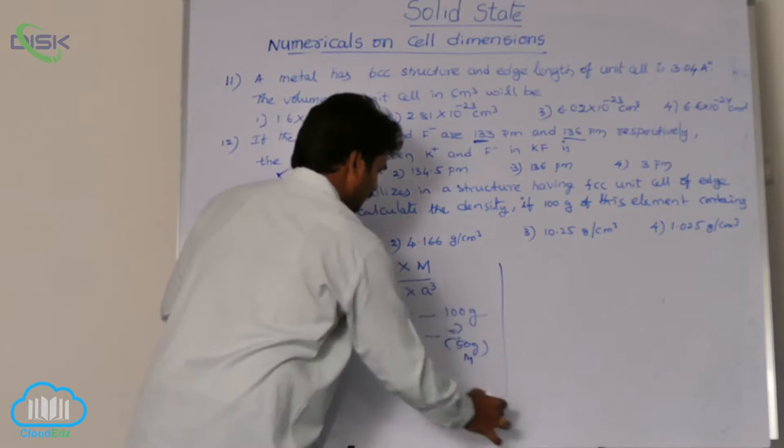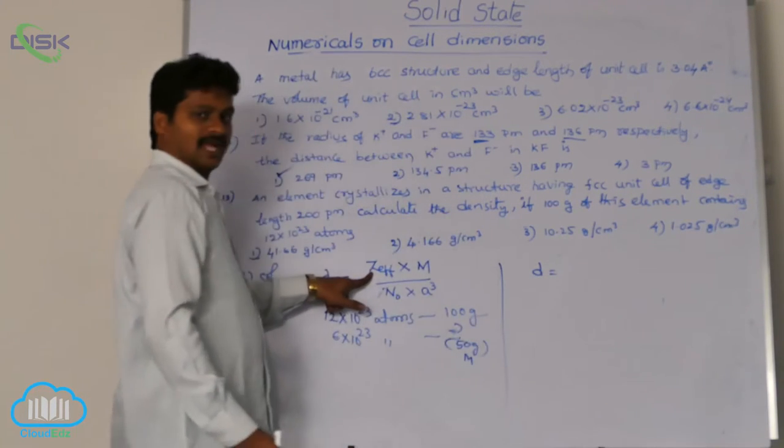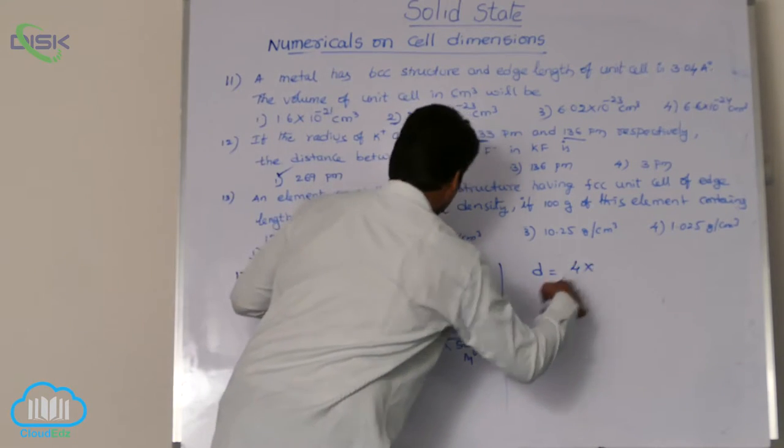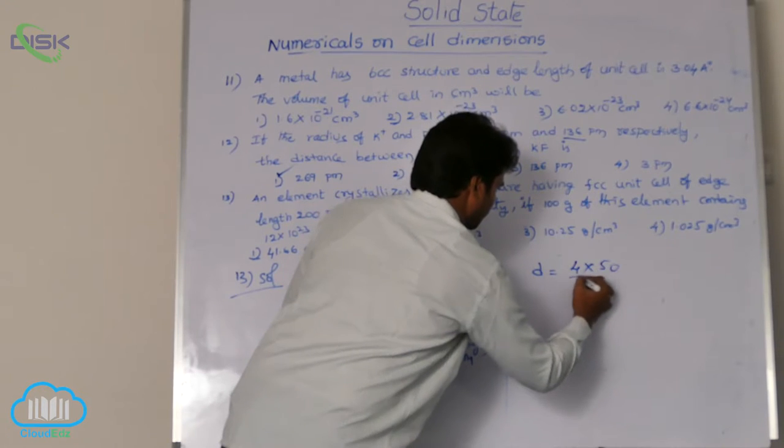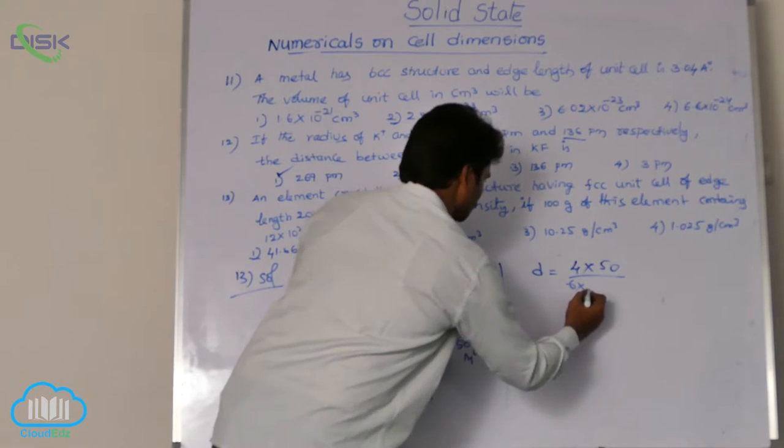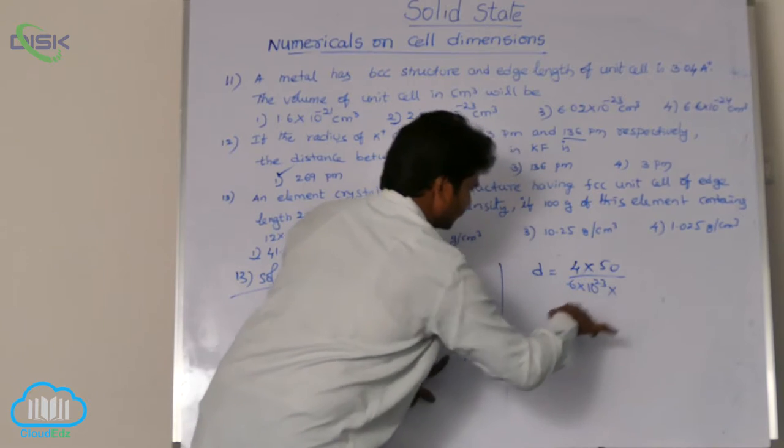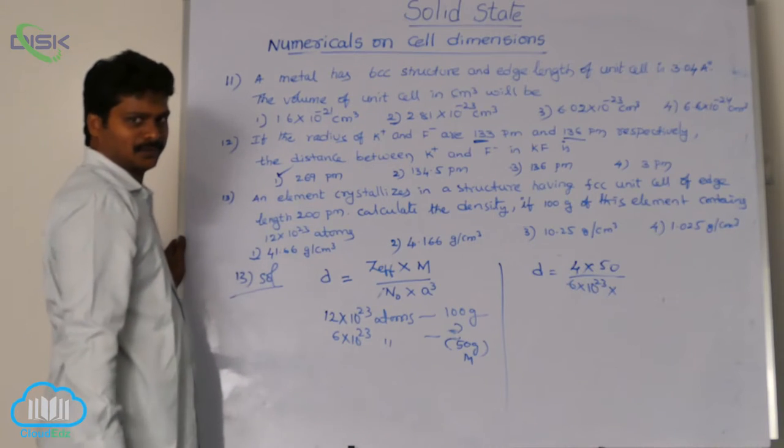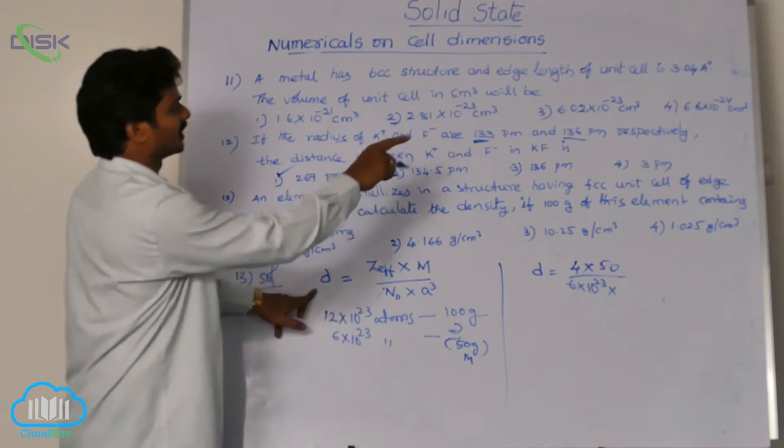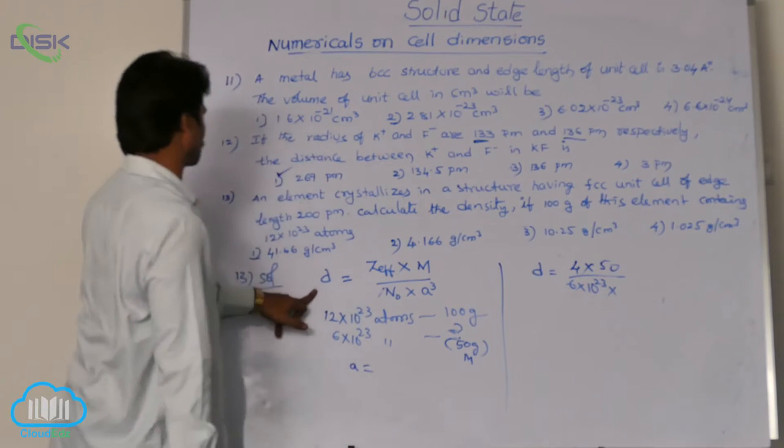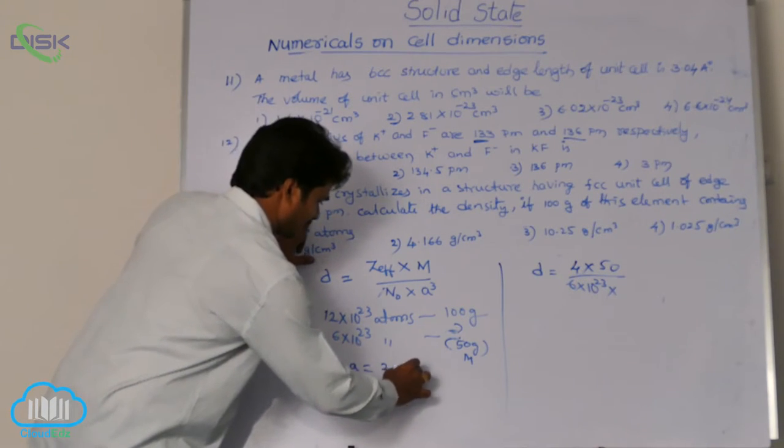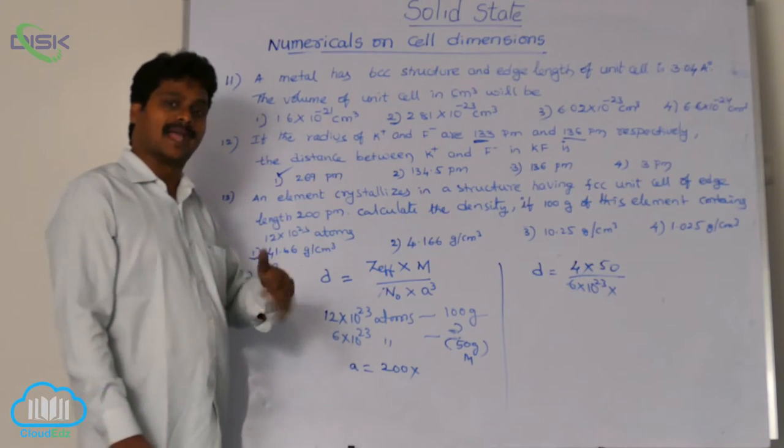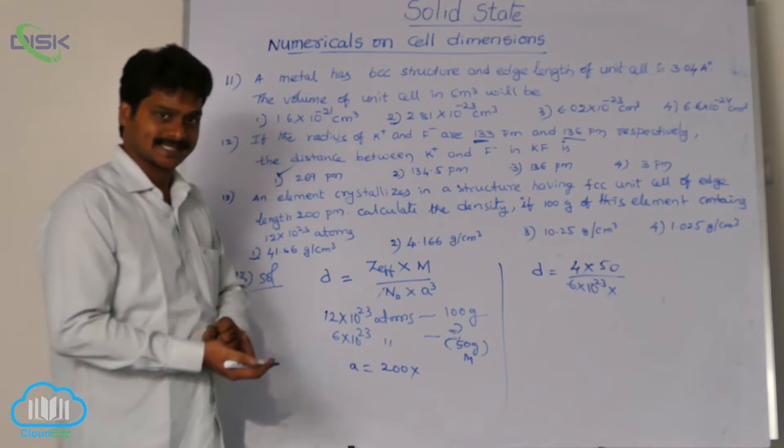So using these we can calculate now density. See here effective number of atoms in FCC 4 into atomic mass 50 divided by Avogadro number 6 into 10 power 23. Now edge length. See here options all are in grams per centimeter cube. That is why convert the edge length given. What is edge length given in the question? 200 picometers. Convert the picometers into centimeters.